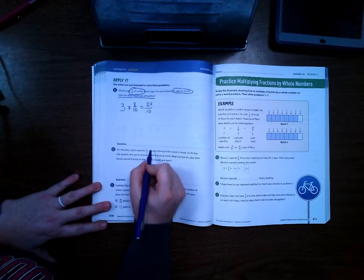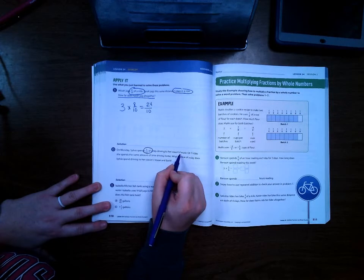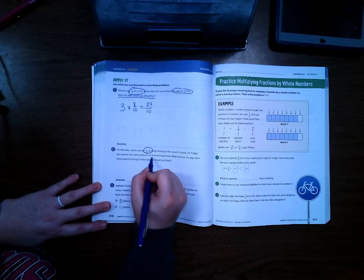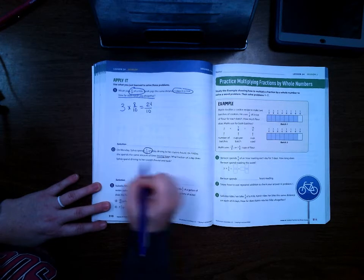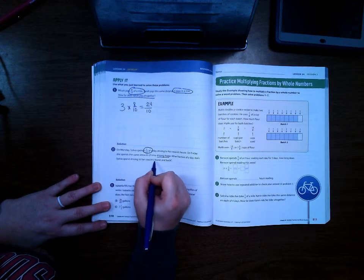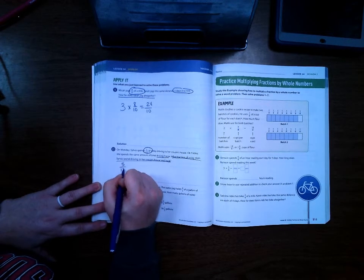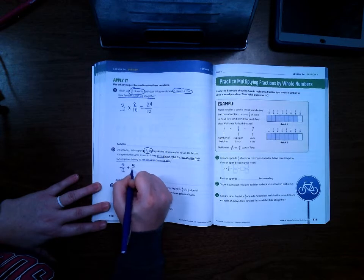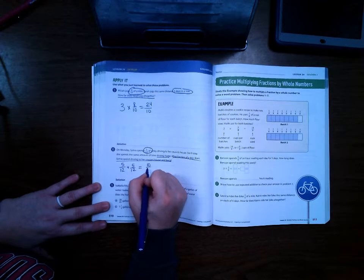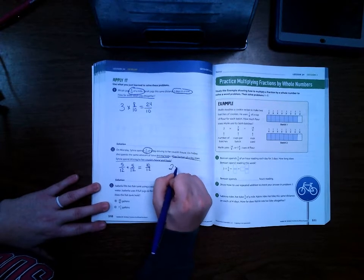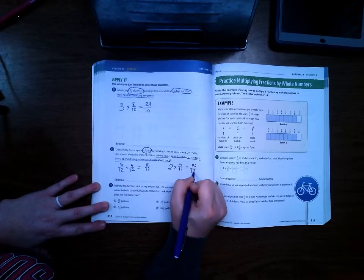On Monday, Sylvia spends five-twelfths of a day driving to her cousin's house. On Friday, she spends the same amount of time driving home. What fraction of the day does Sylvia spend driving to her cousin's house and back? So we have five-twelfths plus five-twelfths, or five-twelfths times two would also be an option, which is ten-twelfths. Or you can do two times five-twelfths, which also equals ten-twelfths.